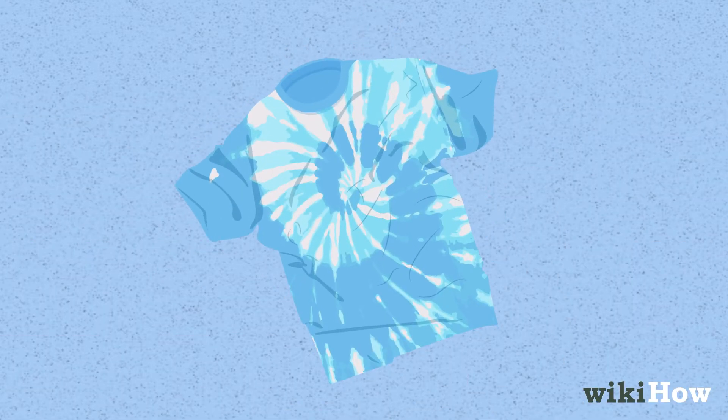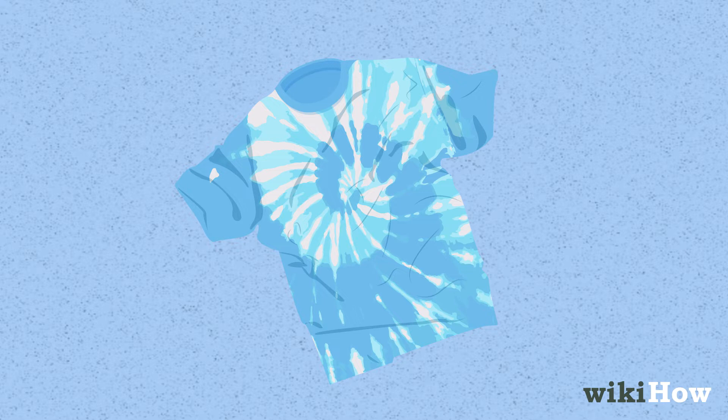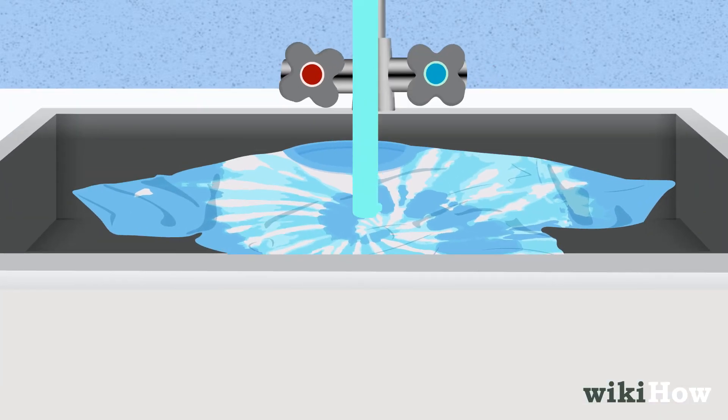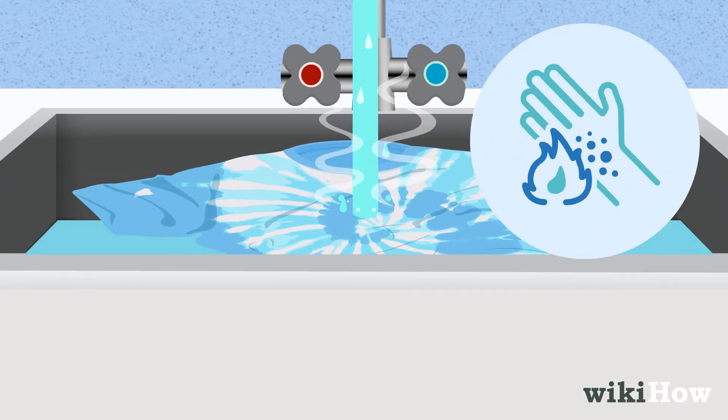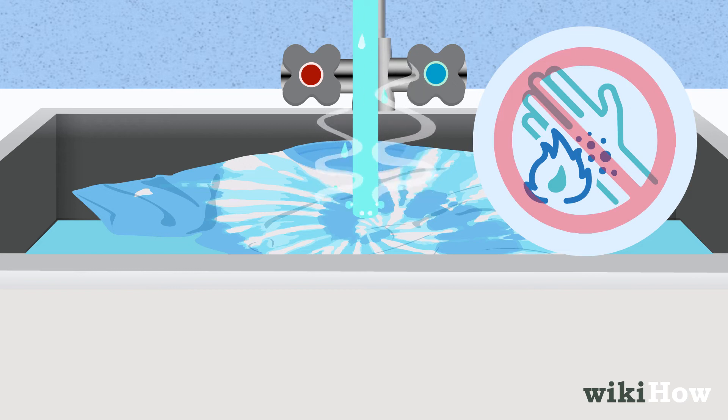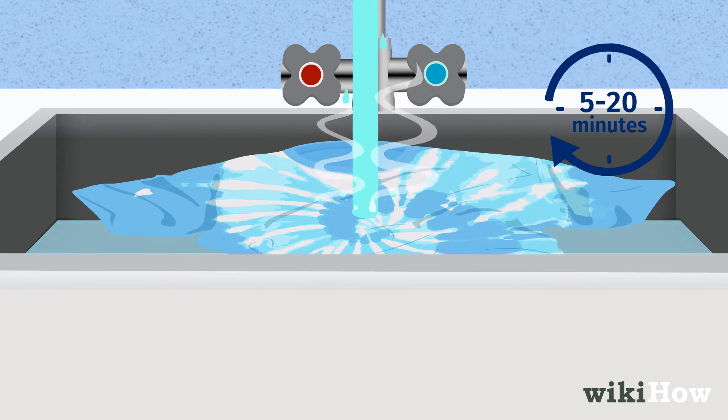Next, remove the ties and spread the dyed fabric out. Rinse the item again under water that's warm, but not so hot that it could scald you. Keep rinsing for 5 to 20 minutes or until the water runs clear.